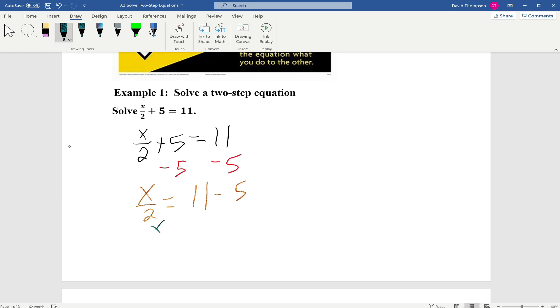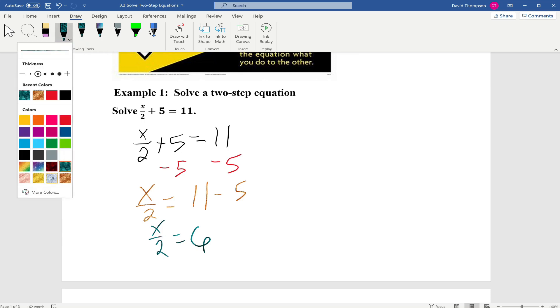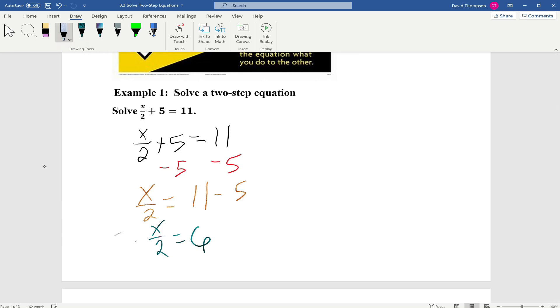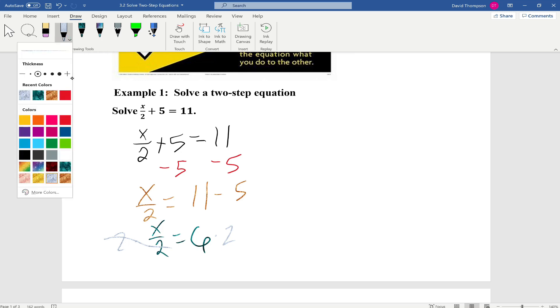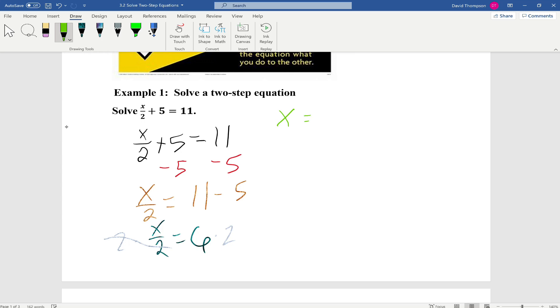So x divided by 2 equals 6. Last step, we're going to multiply both sides by 2. This will cancel out. And we're going to be left with x equals 6 times 2, which gives me 12. So x equals 12.